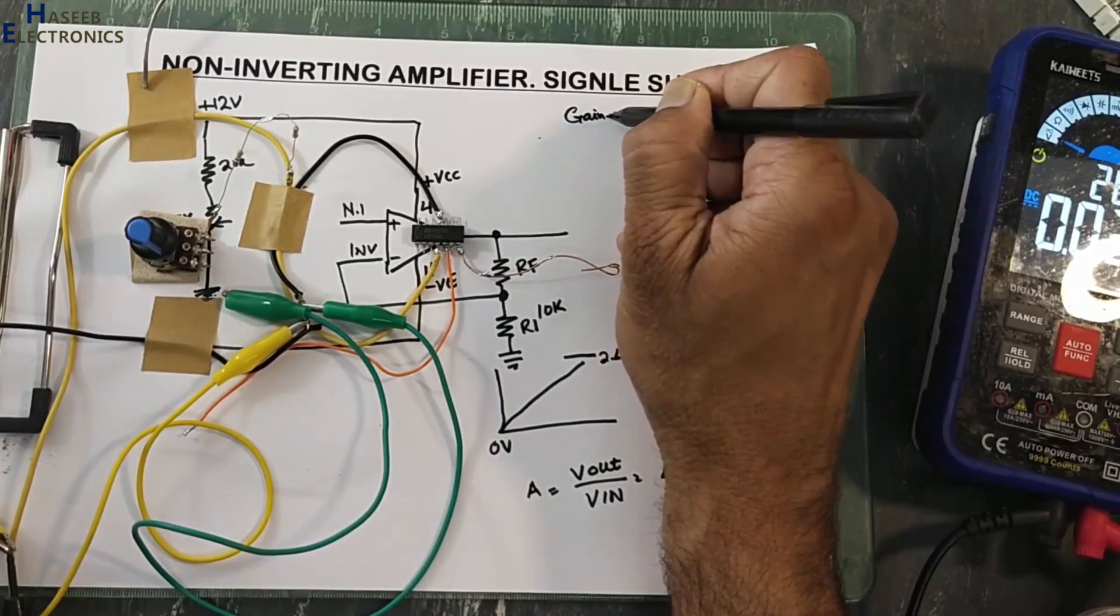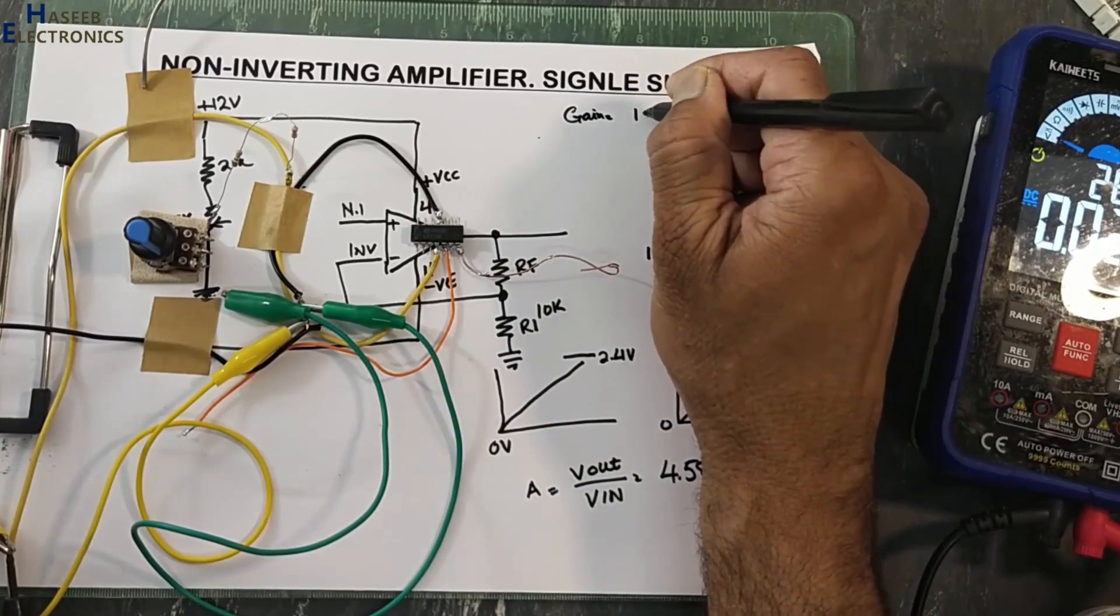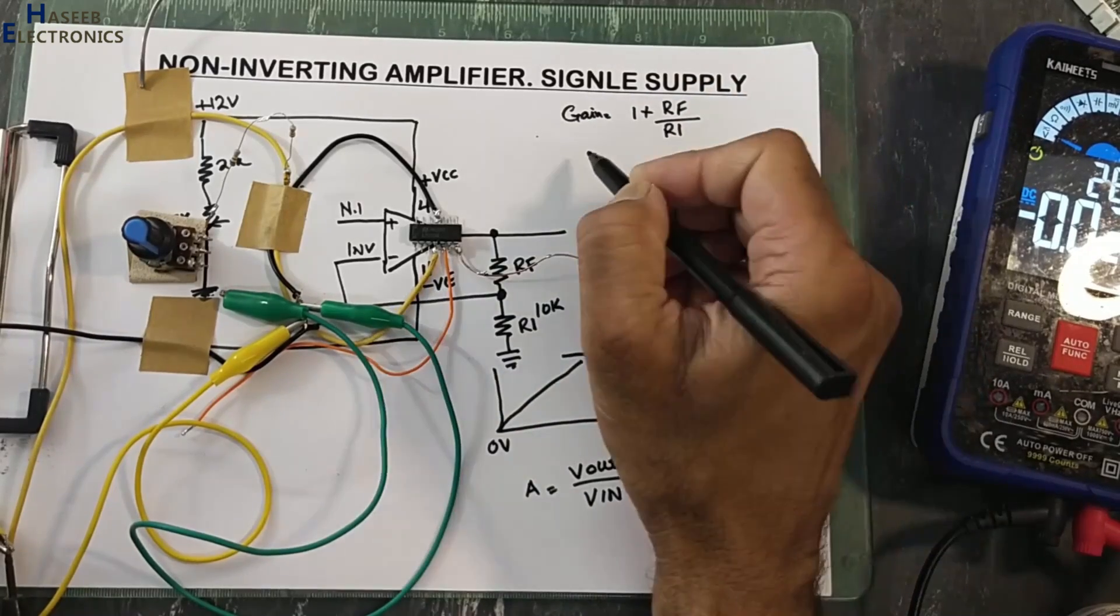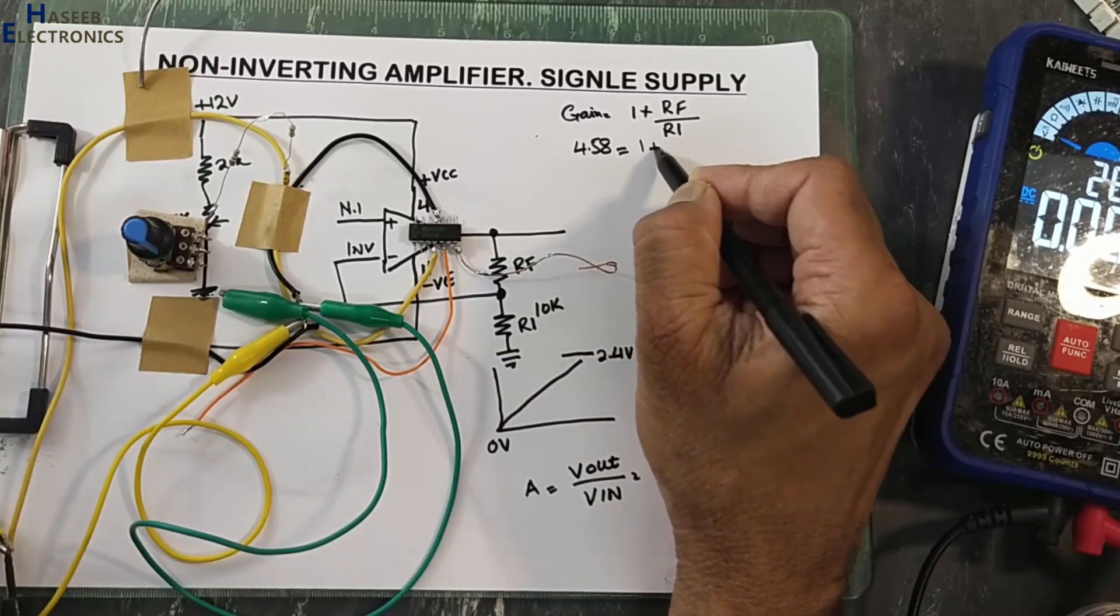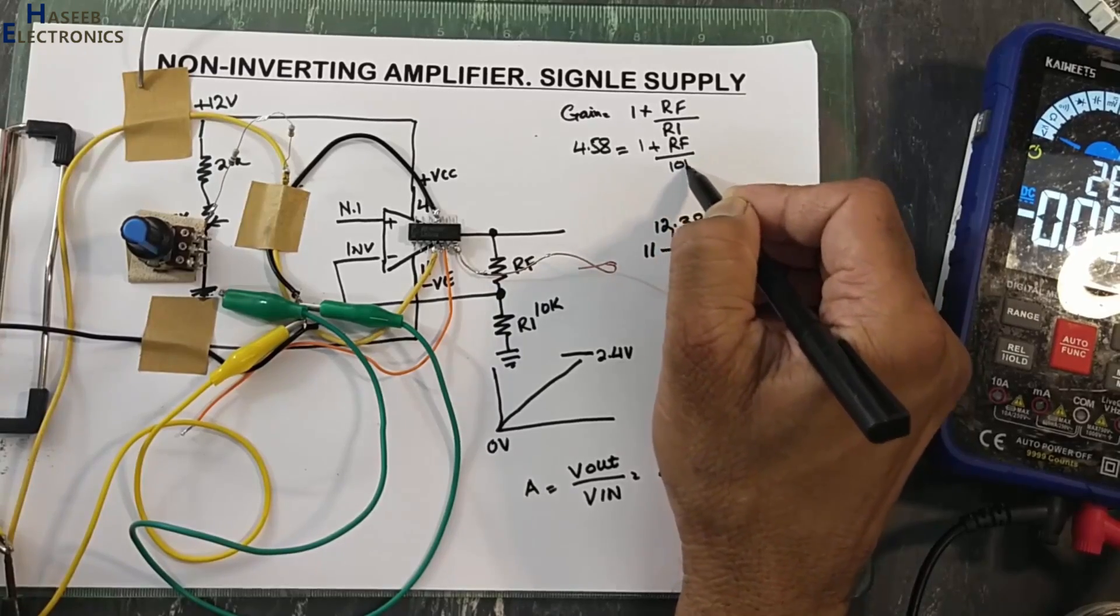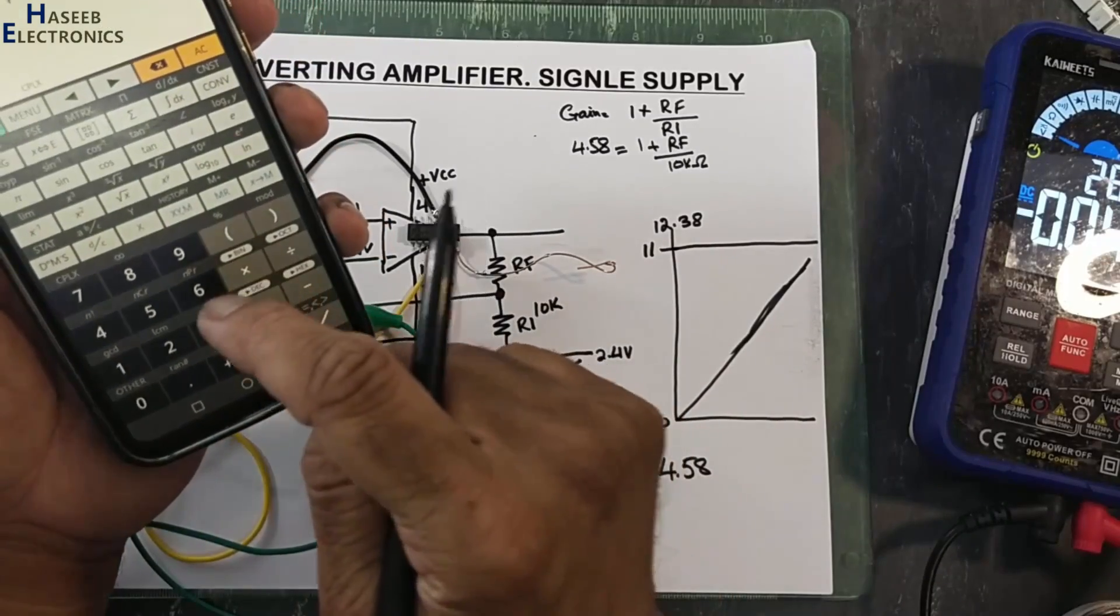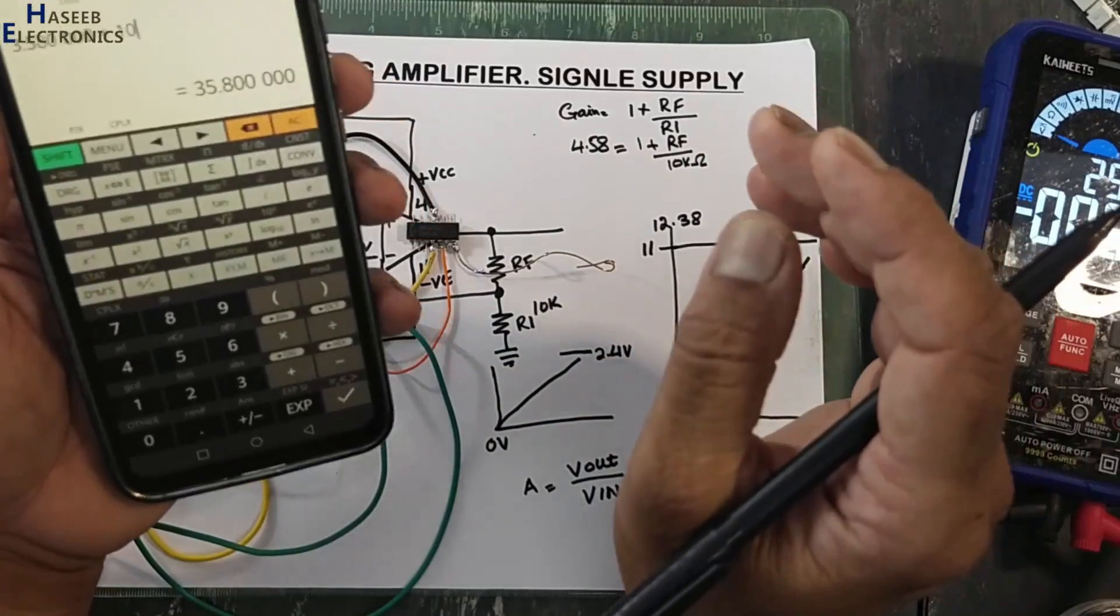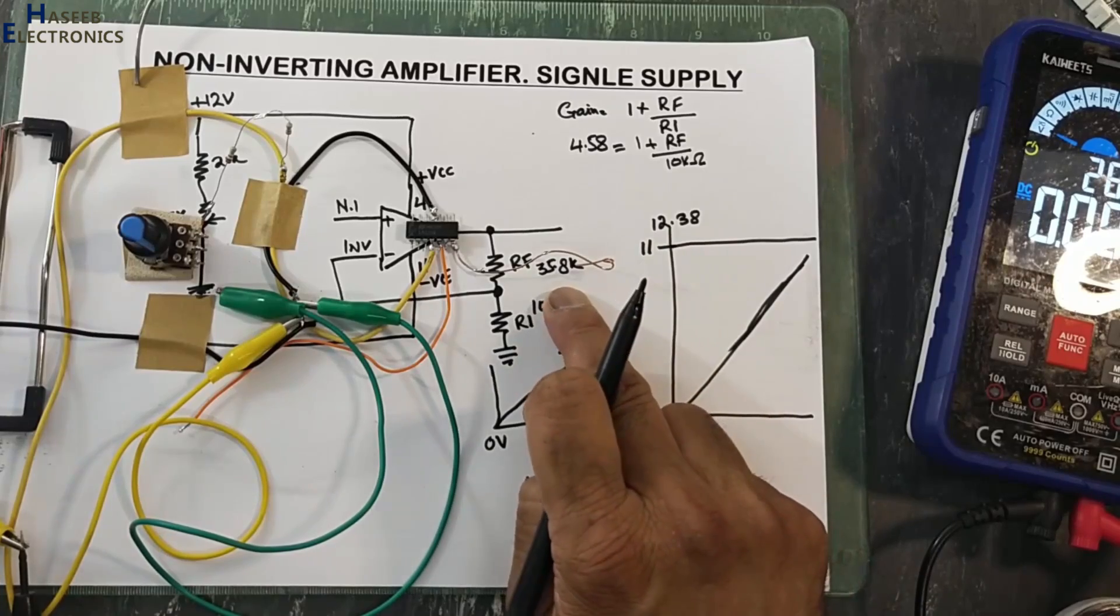4.58 equals 1 plus Rf. We need R1 is 10 kilo. 4.58 minus 1 multiply by 10 equals 35.8 kilo. 35.8k. This is calculated value. If you cannot find the same value, we can use the closer value that is 33k.